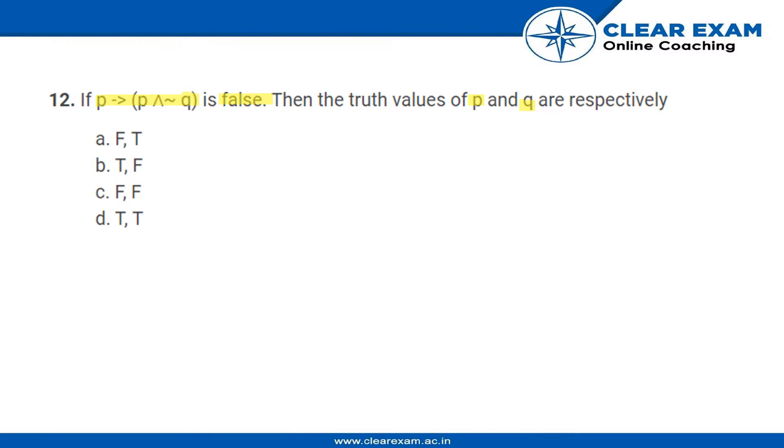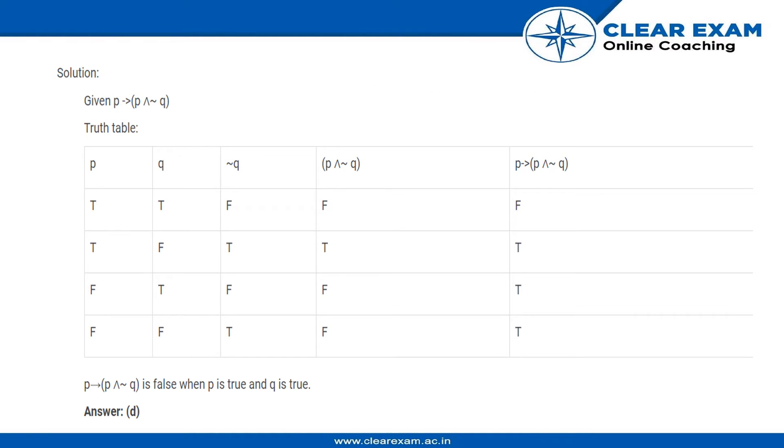So this is the expression that if this given expression is false, then what will be the value of P and Q, the truth values? First let's make the truth table using P, Q, not Q and find this and then this.